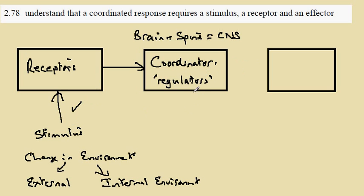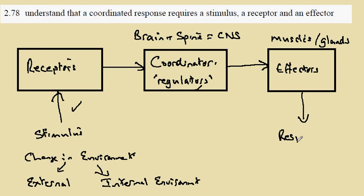there is then output from the coordinator to the effectors. These are often things like muscles or glands - parts of organ systems. The output is known as the response.